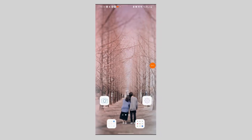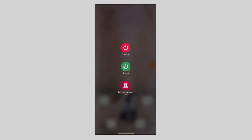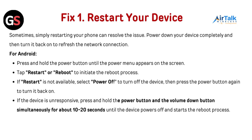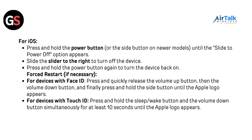For Android, press and hold the power button until the power menu appears on the screen. Tap restart or reboot to initiate the reboot process. If restart is not available, select power off to turn off the device, then press the power button again to turn it back on. If the device is unresponsive, press and hold the power button and the volume down button simultaneously for about 10 to 20 seconds until the device powers off and starts the reboot process.